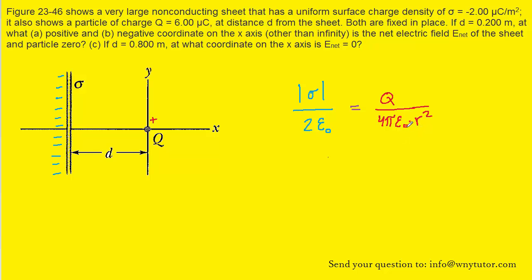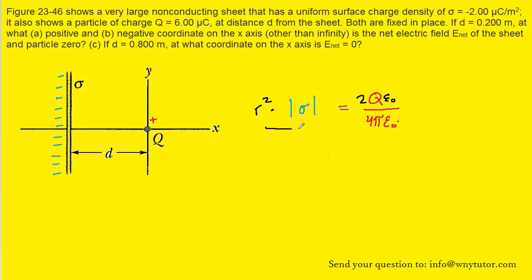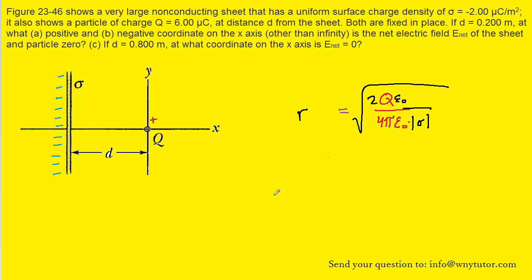What we really want to solve for is R, because R represents the distance from the charged particle Q, and that distance will be somewhere on the right side of Q. To solve for R, we multiply both sides by R squared so that R squared cancels on the right-hand side. We then multiply both sides by 2 times epsilon, moving it to the numerator on the other side so the 2 epsilon cancels on the left. Finally, we divide both sides by the magnitude of the surface charge density, placing it in the denominator on the right. Taking the square root to solve for R, a factor of epsilon cancels out, which simplifies the equation.